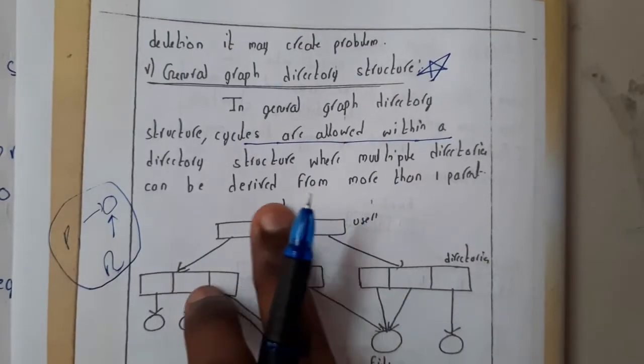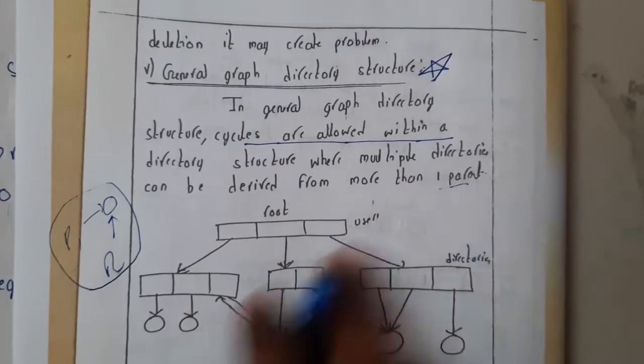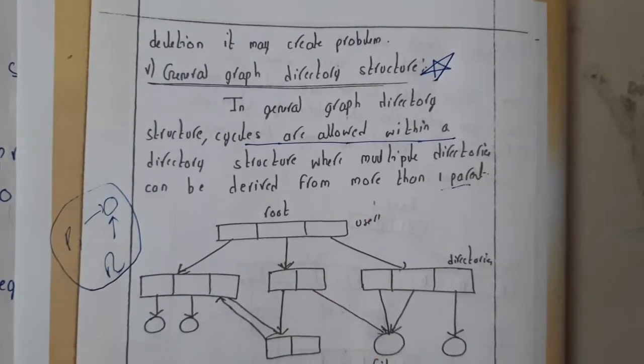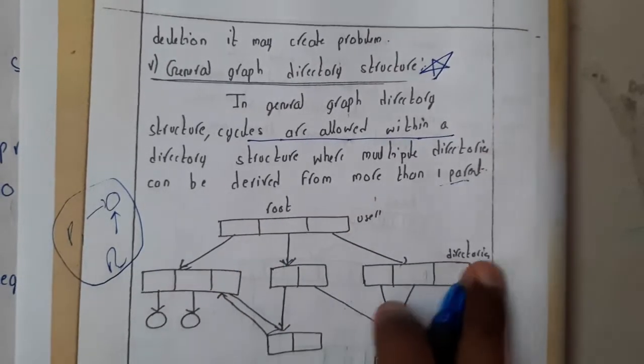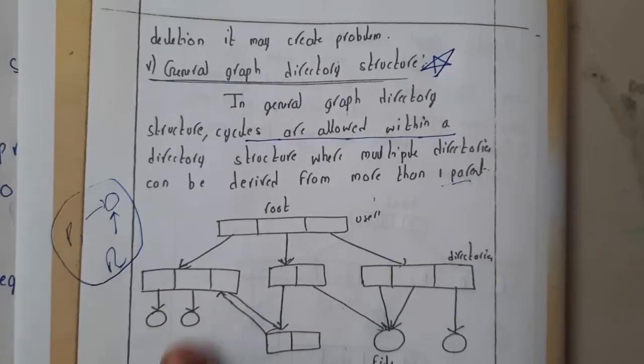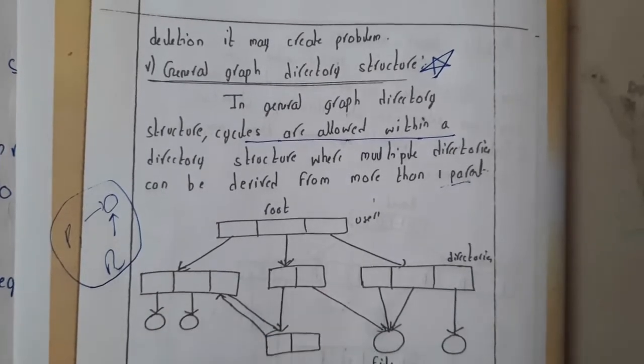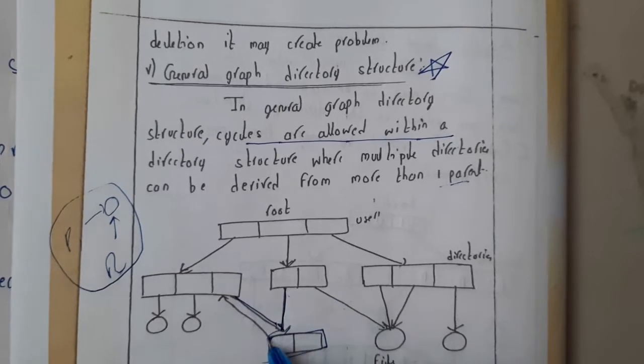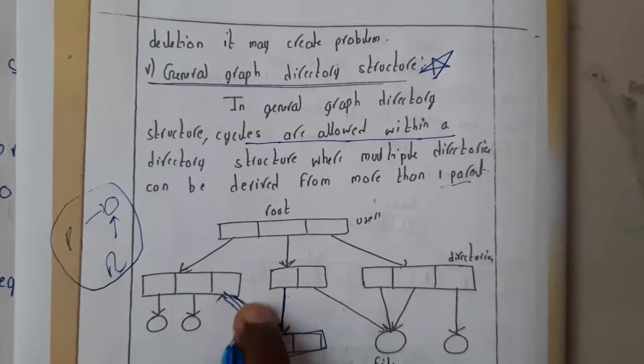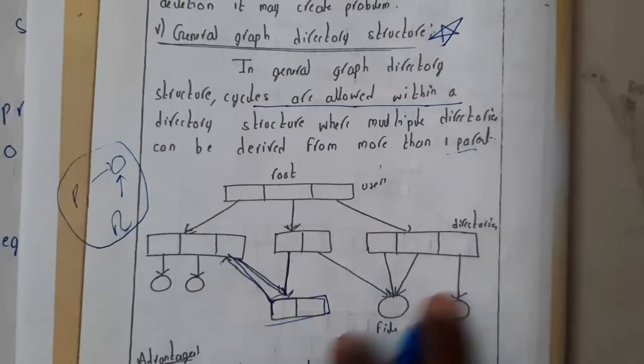Directories can be derived from more than one parent. Basically, we are having users (nothing but roots), we are having few directories, and we are having the files (those are children). See here, this is a directory which is created, and this directory is accessing from here. This is in reverse to that. This is forming a cycle, right? These things will make the accessing of files really easier and faster.